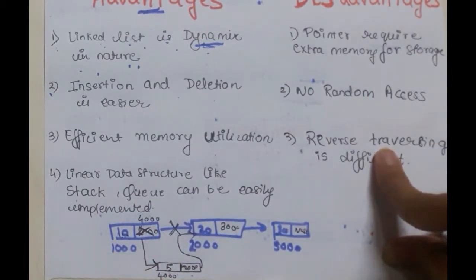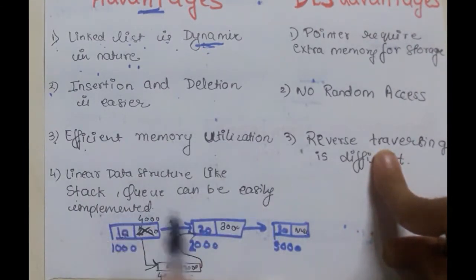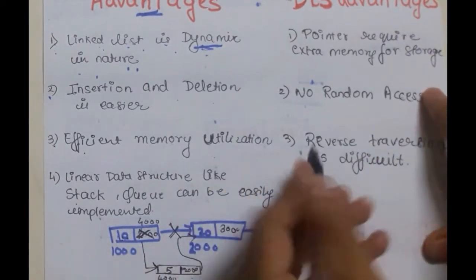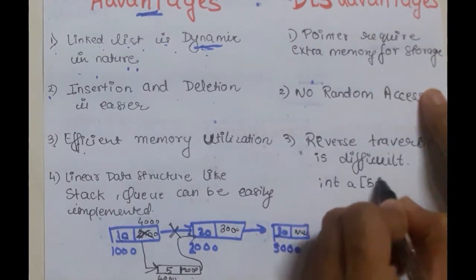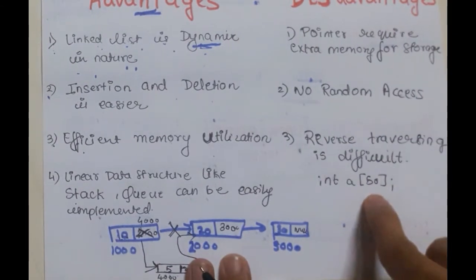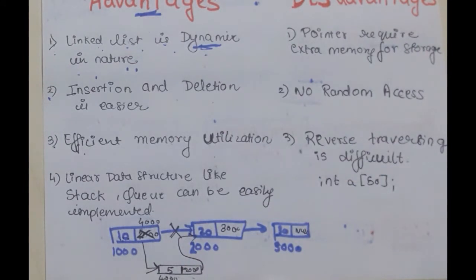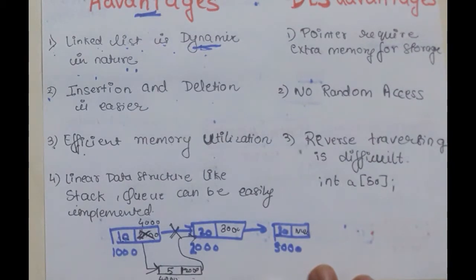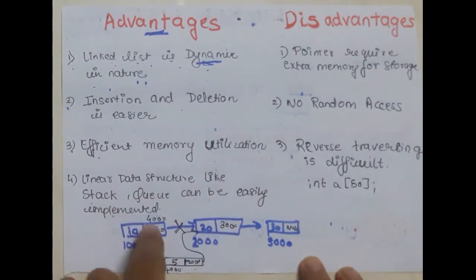The third advantage is efficient memory utilization — there is no need to pre-allocate memory as in arrays, where we write int a[50] and fix the size in advance. With linked list there is no such need to pre-allocate memory. The fourth advantage is that linear data structures like stack and queue can be easily implemented using linked list.